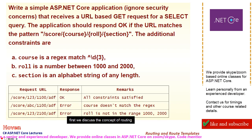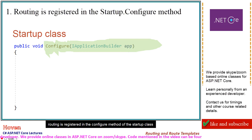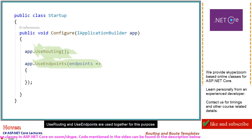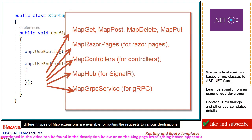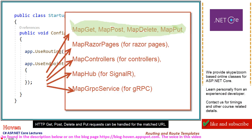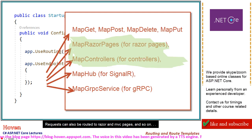First, we discuss the concept of routing. Routing is registered in the Configure method of the Startup class. UseRouting and UseEndpoints are used together for this purpose. Different types of map extensions are available for routing the requests to various destinations. HTTP GET, POST, DELETE, and PUT requests can be handled for the matched URL. Requests can also be routed to Razor and MVC pages and so on.